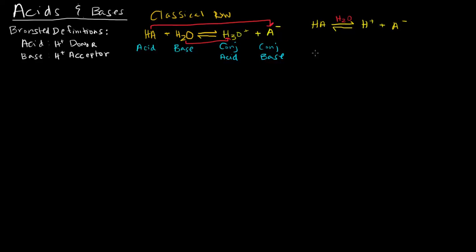What we can do is write out what's called the Ka expression. The Ka expression is the equilibrium constant expression, but specifically for acids. We call it Ka because it's an acid dissociation equation. It equals the concentration of the products — H+ and A- — over the concentration of the reactant, the undissociated acid HA.